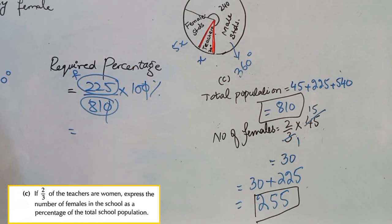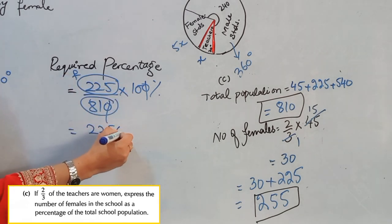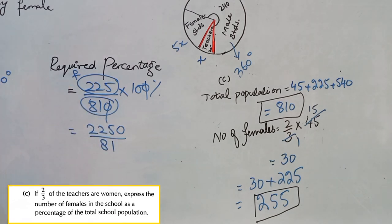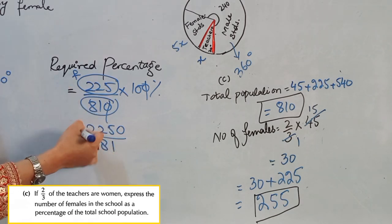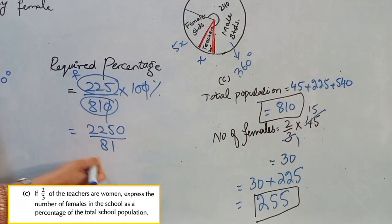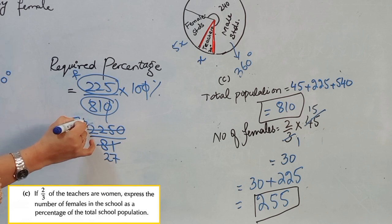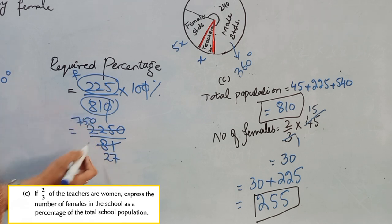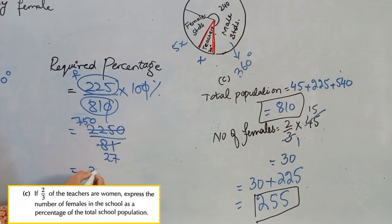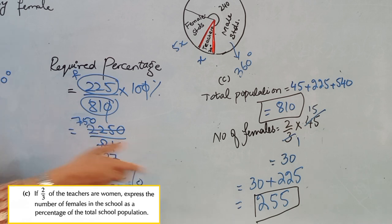Now we simplify: 255 into 10 gives 2550, divided by 810. We can simplify first — 3 goes into 810 giving 270, and into 2550 giving 850. Then further simplification gives 750 divided by 27. After dividing, you will have 31 and 3/27 percent as the required percentage.